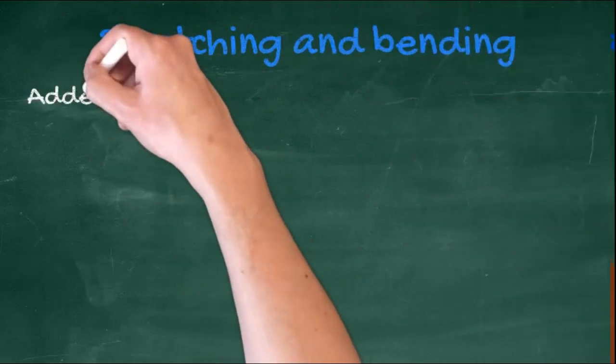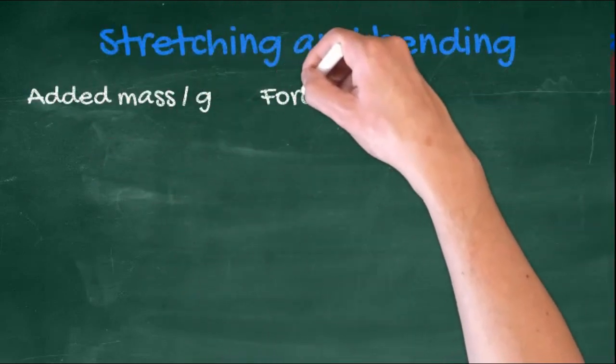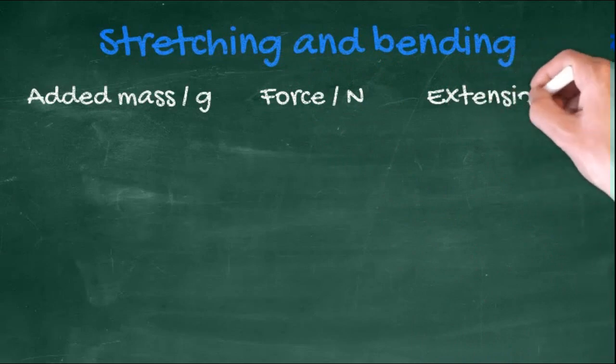And here are the results. Grams are converted to newtons by multiplying by the value of g.